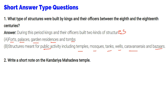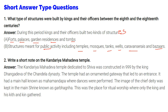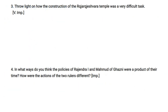The Kandaria Mahadeva temple was dedicated to Lord Shiva and was constructed in 999 CE by King Dhangadeva of the Chandela dynasty. The temple had an ornamented gateway leading to an entrance hall, a main hall known as the mahamandapa where dances were performed, and a main shrine known as the garbagriha where the chief deity was kept — the place of ritual worship where only the king and his kin gathered.